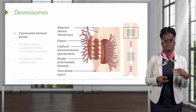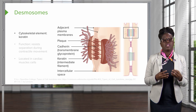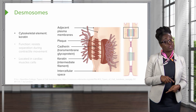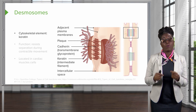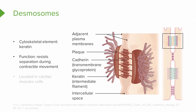In desmosomes, we have plaques as well. In this case, the transmembrane protein is still catherin, but the cytoskeletal element is now keratin, an intermediate filament. Desmosomes have the same type of function as adherent junctions in that we're resisting separation during contractile movements, except in this case we find desmosomes in places like cardiac muscle cells.